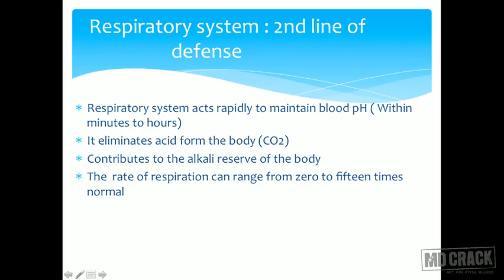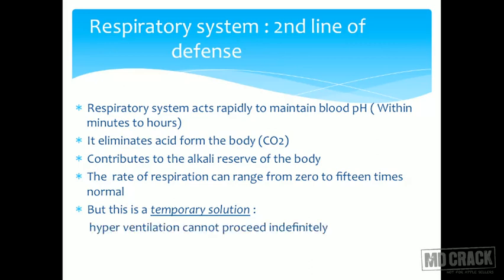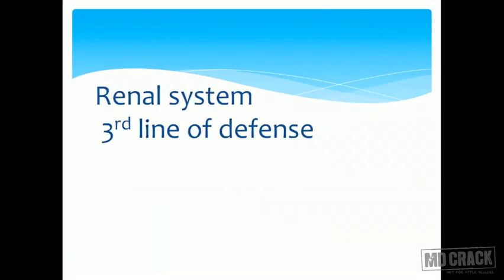The rate of respiration can range from 0 to 15 times normal. However, this is a temporary solution — we cannot hyperventilate indefinitely. Plus, the respiratory system can take care of only the volatile acids; there is no taking care of fixed acids. So the body needs another mechanism — and that is the renal system.